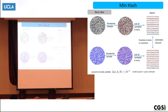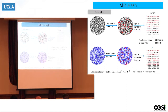If you use one hash function and take the smallest n of them, you've basically sampled n. There are other ways where you use a whole family of hash functions and take one from each, but in practice you just do it once.